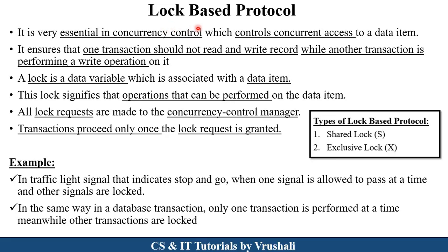The first type of concurrency protocol is lock-based protocol. Lock-based protocol is very important in concurrency control management. When multiple transactions perform at the same time on the same database and same data item, it maintains the consistency of the database. Suppose one transaction performs a read and write operation — at that time, another transaction cannot perform any operation on it. And if one transaction performs only a read operation, then another transaction can also perform only a read operation, not a write operation. A lock is a built-in variable already associated with a data item that controls operations on that item, like lock of A, where A is the data item.